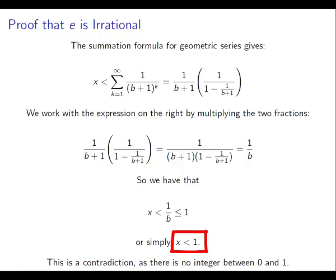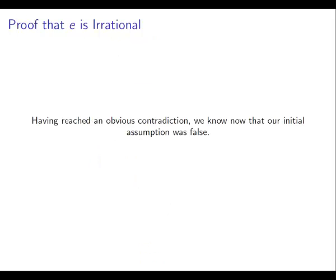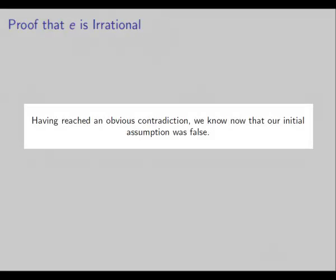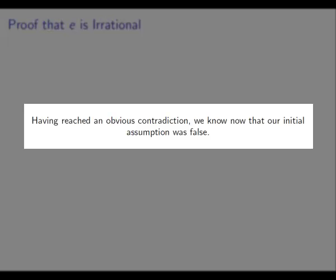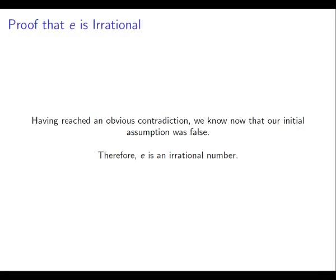And that's our contradiction. Because we're seeing that x is an integer, it's bigger than 0, and it's smaller than 1. That's a contradiction — there is no integer between 0 and 1. So, having reached an obvious contradiction, we now know that our initial assumption was false. Therefore, we reject our initial assumption that e was rational, and we see that e is an irrational number.